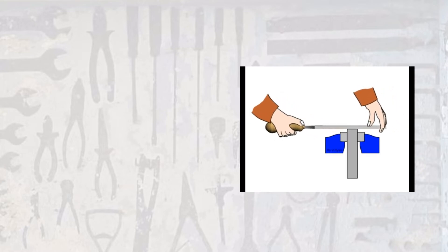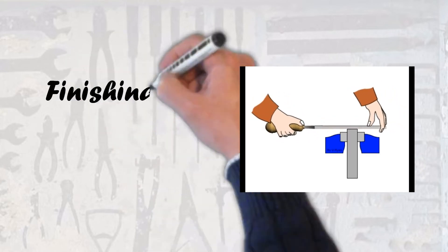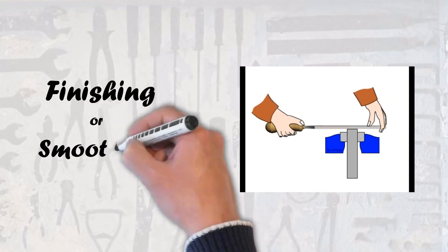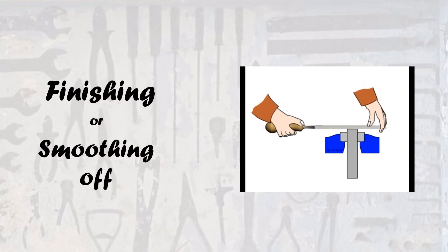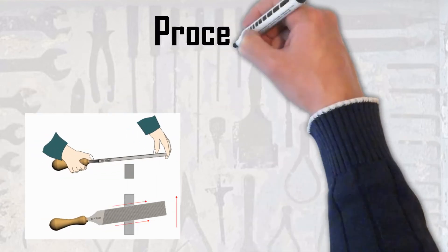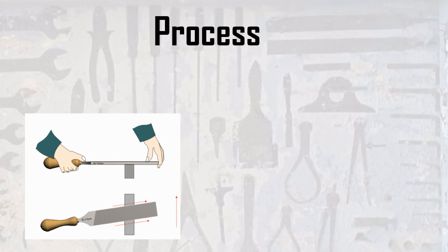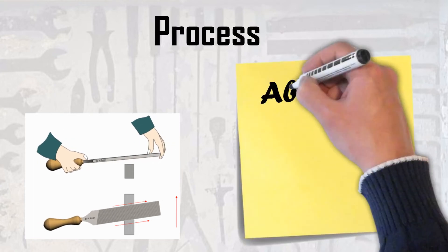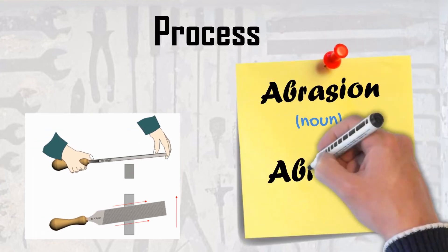We could also use files for what we call finishing, also known as smoothing off. The process that a file uses to make something smooth is called abrasion.